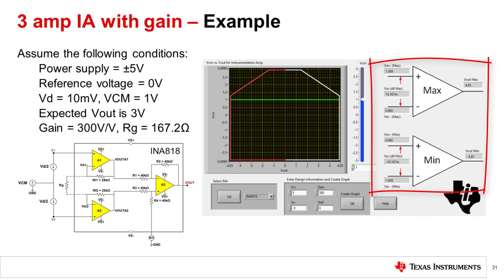On the right-hand side, you will see the input and output voltages this INA is able to process given our conditions. We are able to process input differential voltages from negative 16.17 millivolts to positive 16.17 millivolts to yield an output between negative 4.85 volts to positive 4.85 volts. Our input differential voltage is 10 millivolts. That's within range. Our expected output is 3 volts. That's also within range. We can now safely create our circuit.